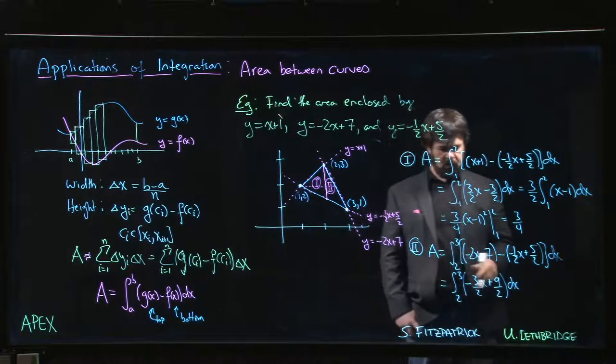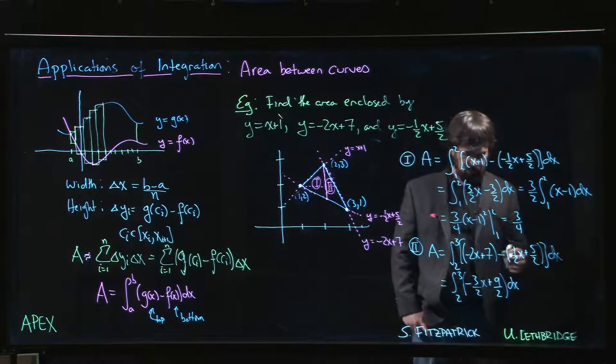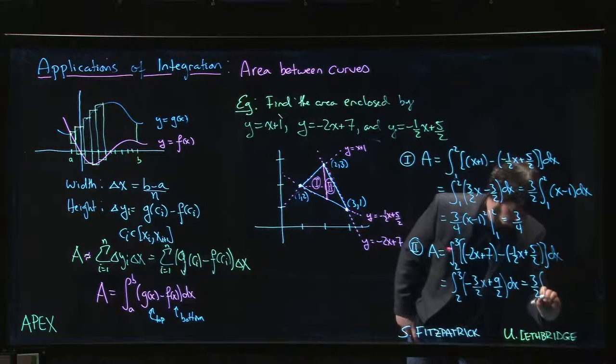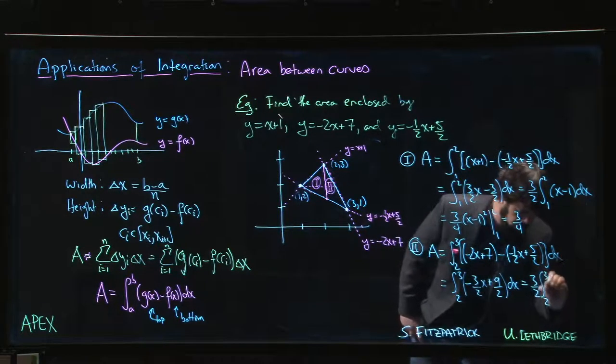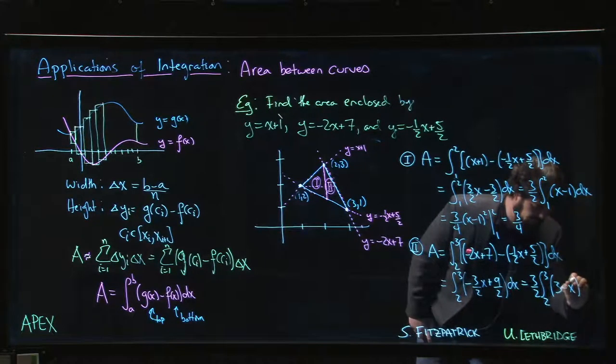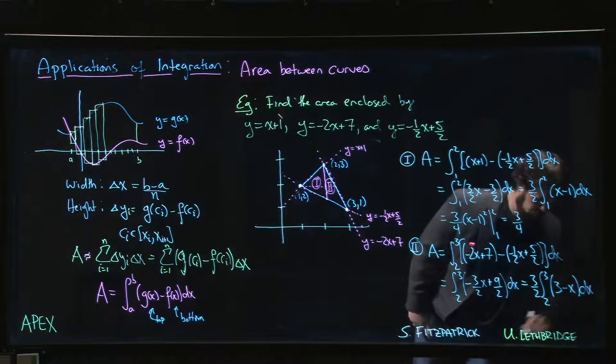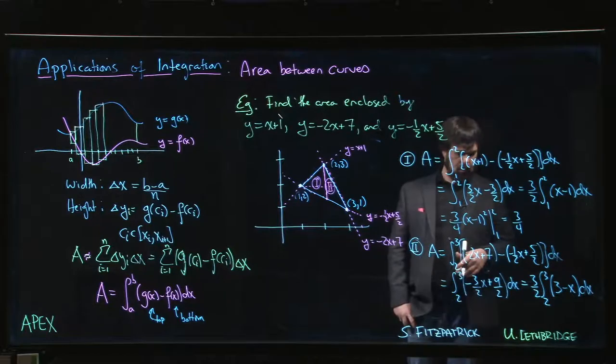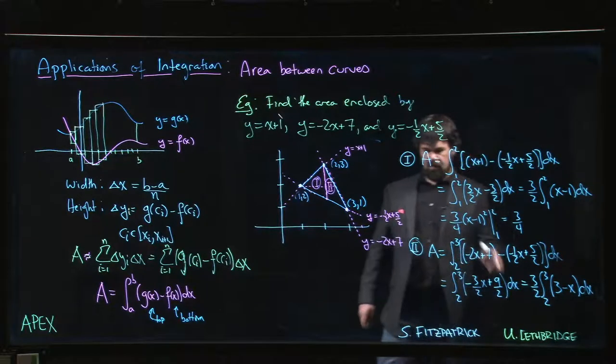And if you want to, you could again factor out a 3 over 2. Integral from 2 to 3 of 3 minus x. You could do it like that. It's up to you how you want to do it. Can we squeeze it in? Let me finish it over here.